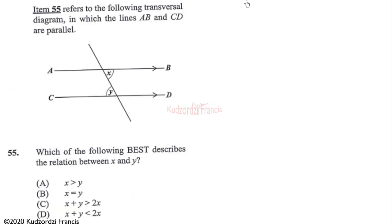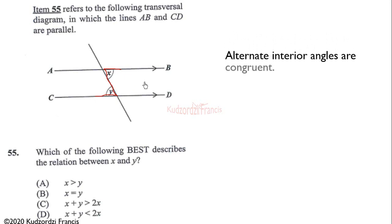Question 55 refers to a transversal diagram where lines AB and CD are parallel. Which statement best describes the relation between x and y? These are alternate interior angles — tracing the shape gives a Z-shape, and the corner angles of a Z-shape are alternate interior angles. Therefore the two angles are congruent, meaning x = y.